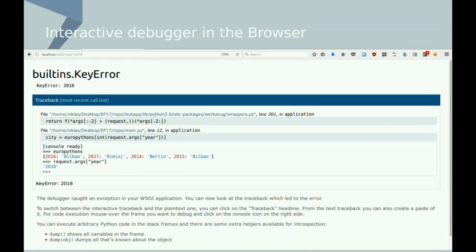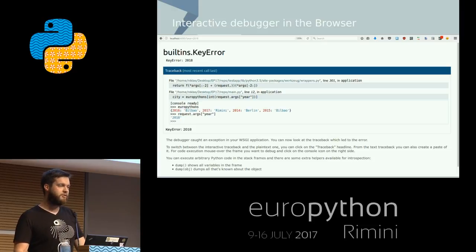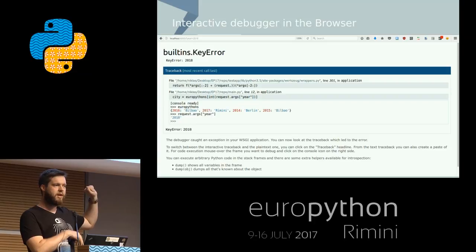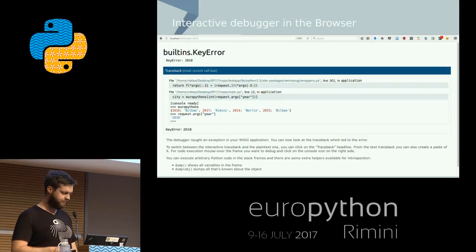I'm not brave enough to do a live demo, so you'll have to live with a screenshot of the live debugger. Here I have put together a simple application. If you look at the URL bar, I requested 2018 for something and got a key error. I can just go into the browser, open up an interactive terminal where I get thrown into the scope, and introspect all the things in scope. I find out I've actually requested the location of EuroPython 2018, which is, as far as I know, not defined yet — and this is the problem with my application. This debugger is also implemented as a middleware. If I want to use it, I just wrap the debugger middleware around my application and any exception that bubbles up will get caught and presented in this nice way.